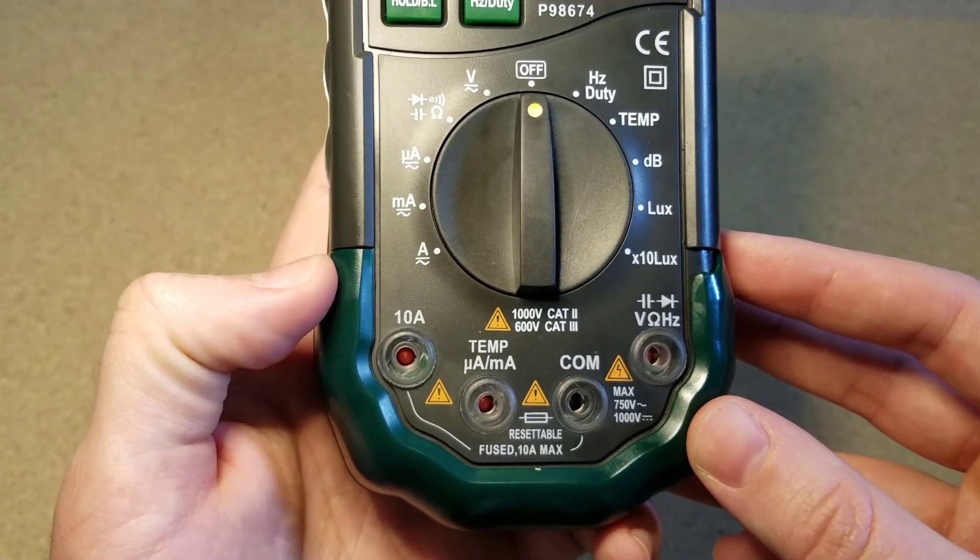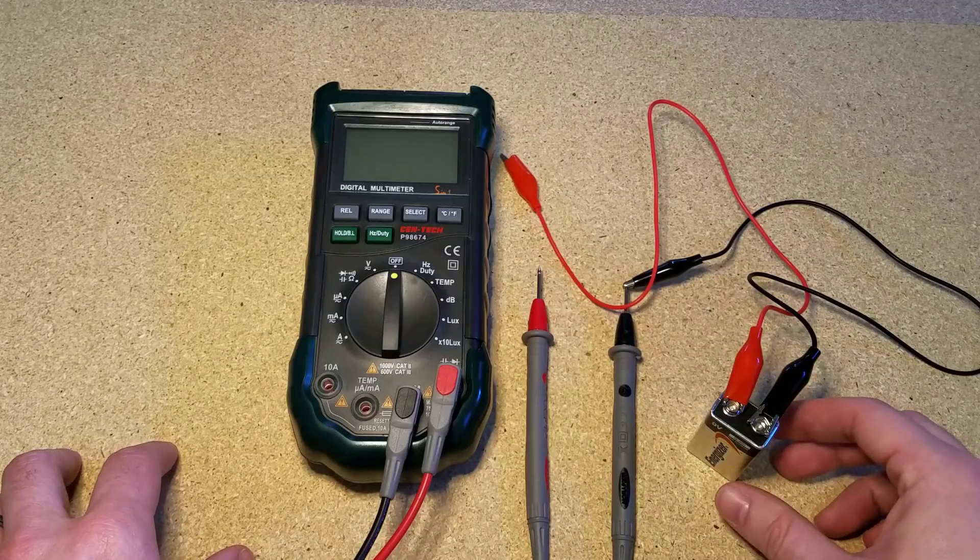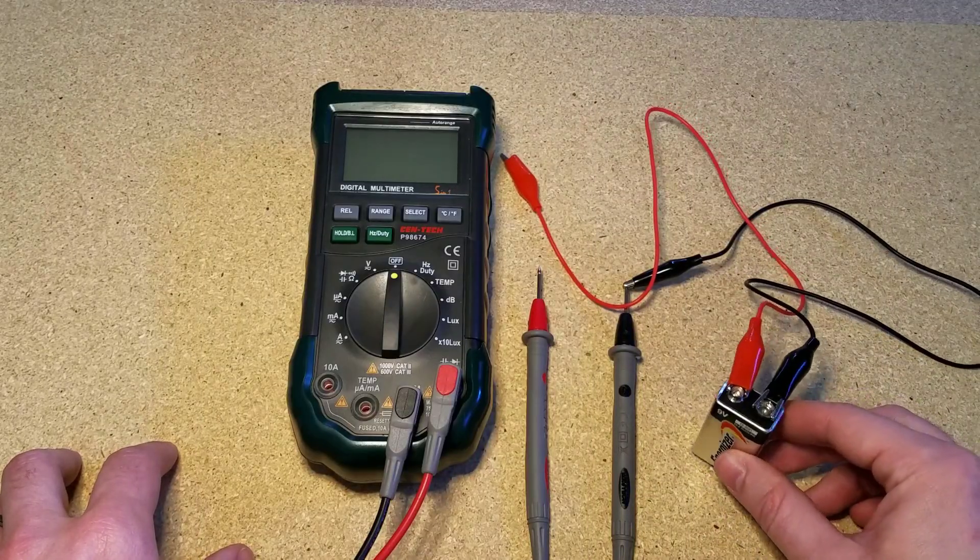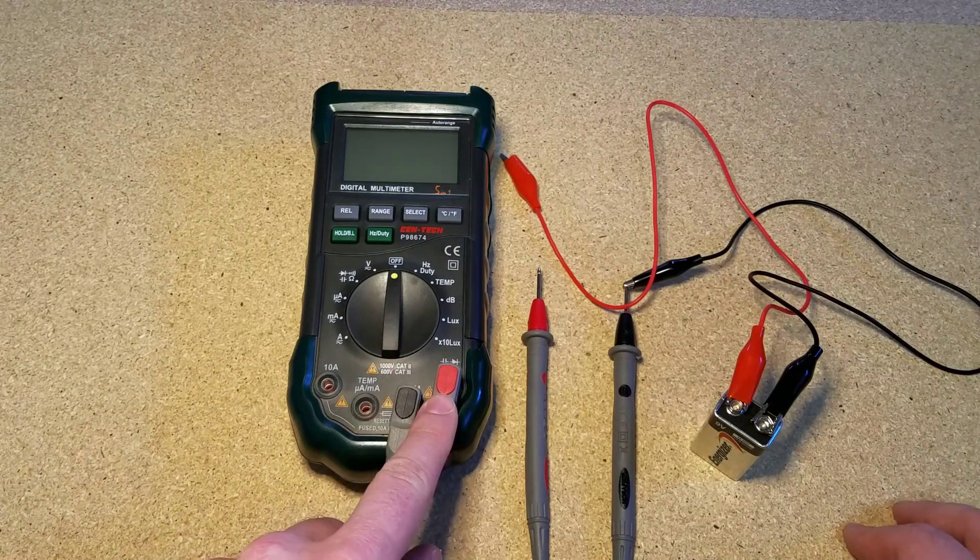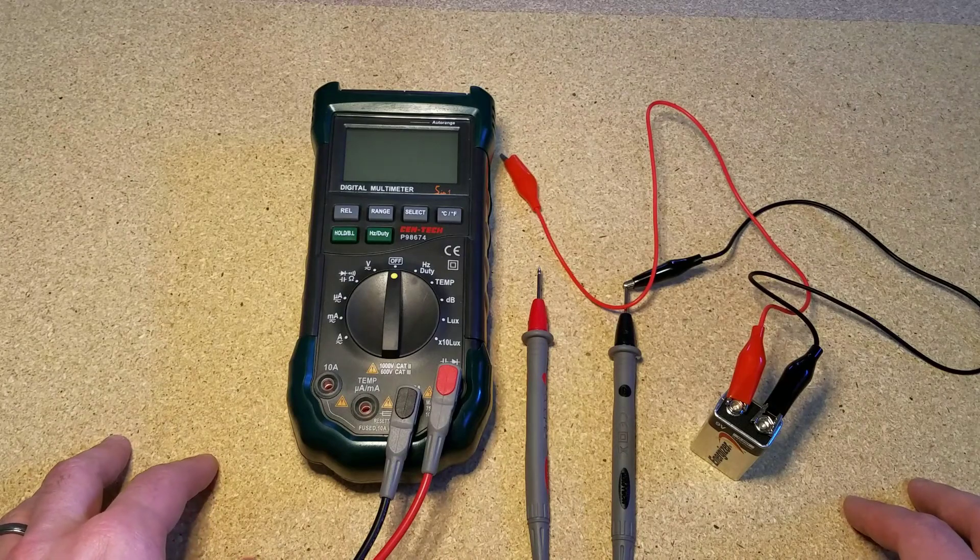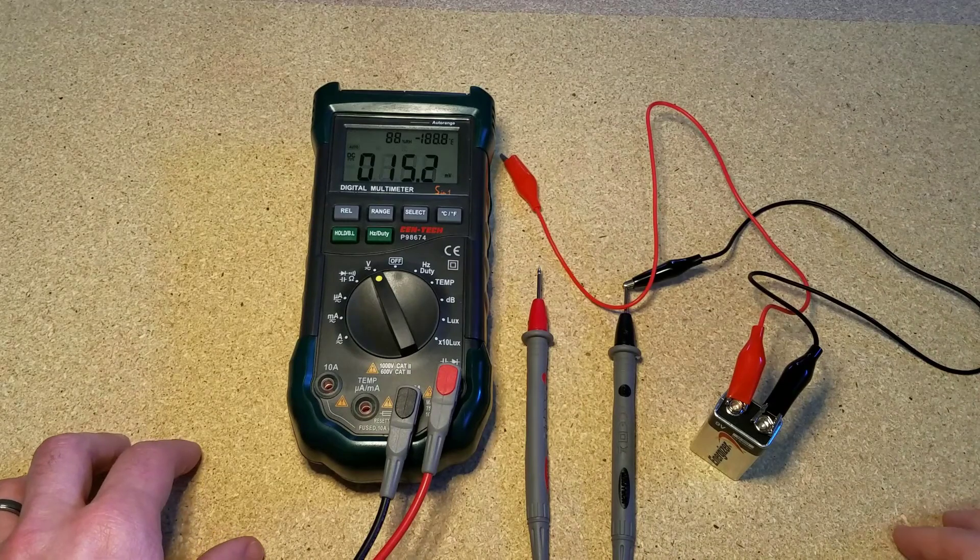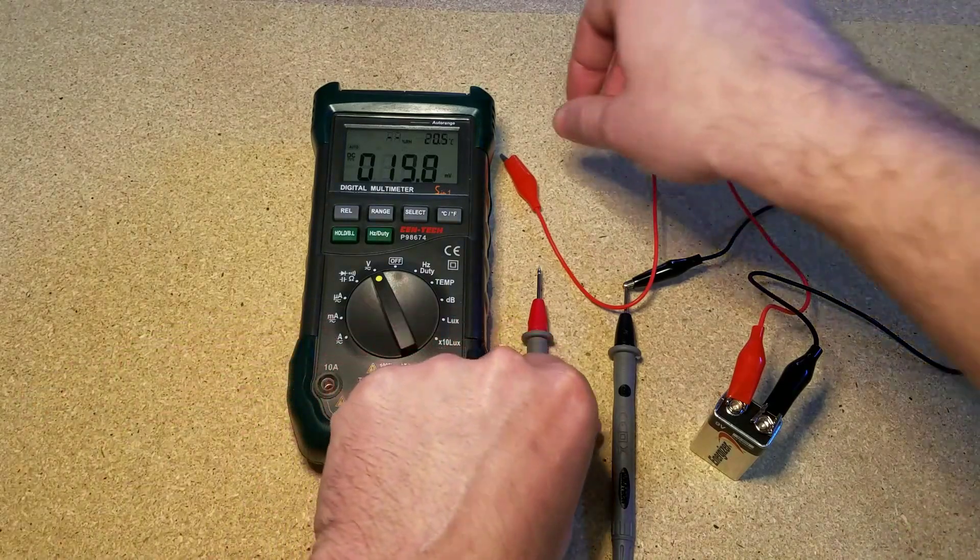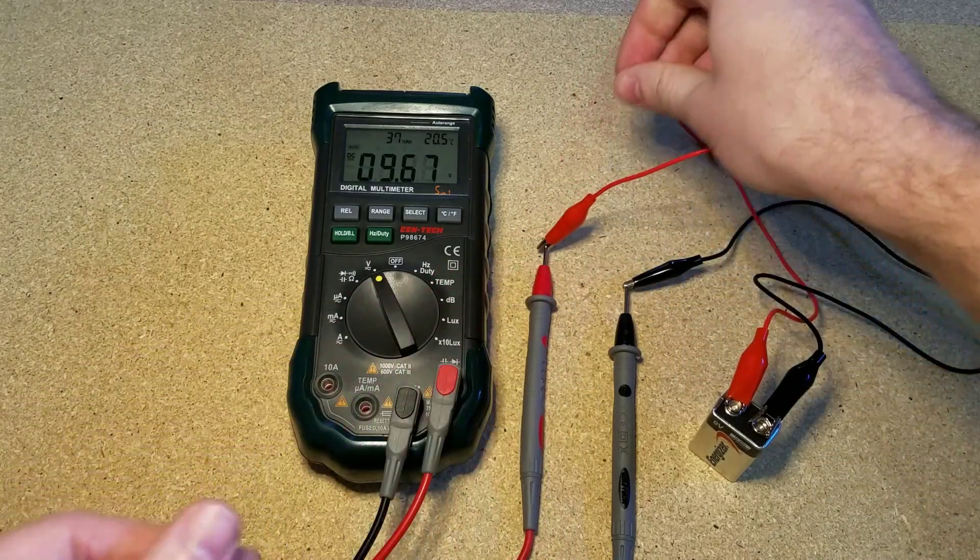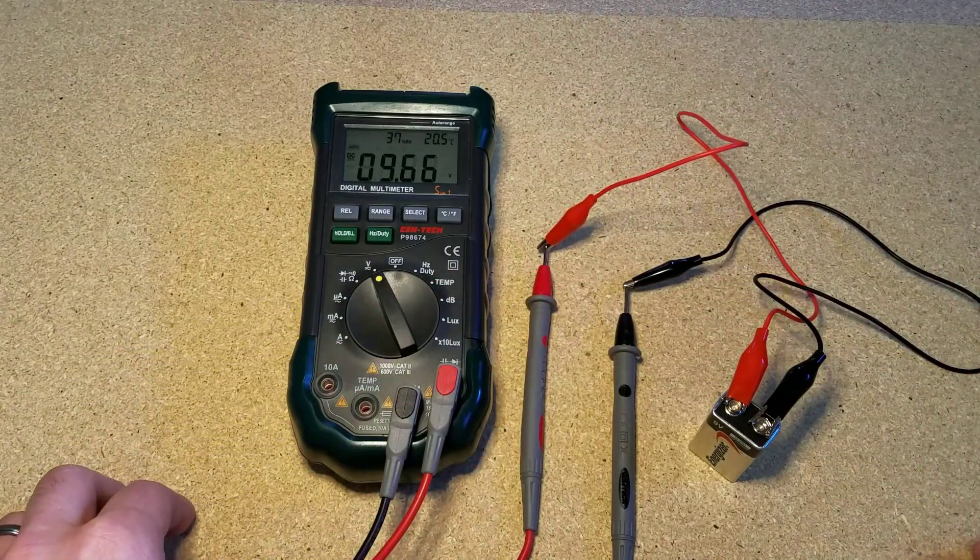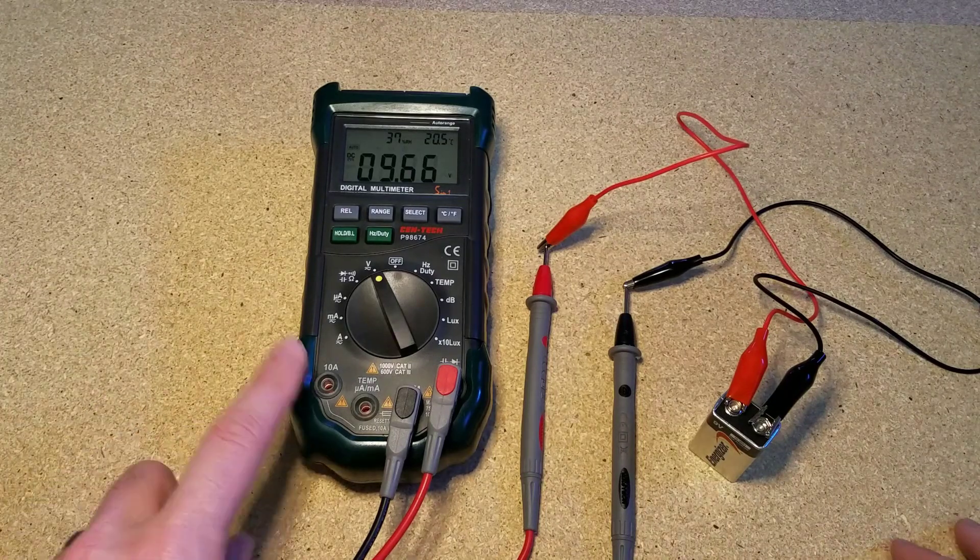All right, now I've got the meter hooked up to a 9 volt battery. I've got my black probe going to the common port, got the red probe going to the voltage port. So let's hook up the circuit and see what it does. First I'm going to turn the dial to the voltage setting, turn the meter on, and then I'll connect the circuit. There we go, 9.66 volts. Easy peasy.